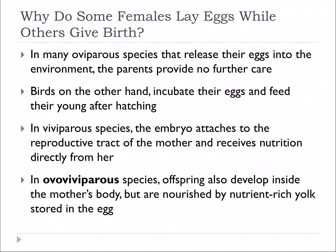So why do some females lay eggs while others give birth? In many oviparous species that release their eggs into the environment, that's the last thing they do — there's no parental care. Whereas birds, on the other hand, will incubate their eggs and feed their young after hatching. In viviparous species, the embryo attaches to the reproductive tract of the mother and receives nutrition directly from her. In ovoviviparous species, offspring develop inside the mother's body but are nourished by a nutrient-rich yolk stored in the egg.